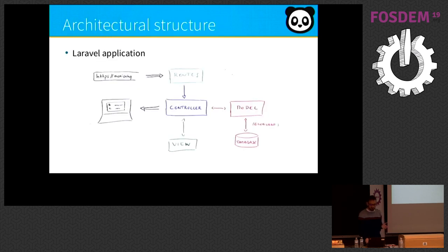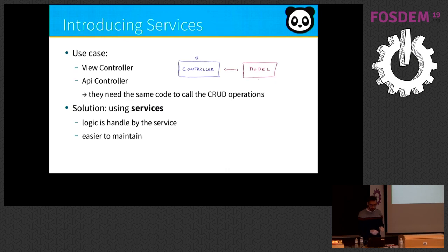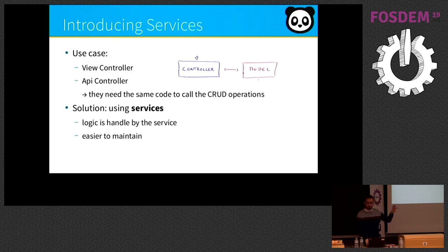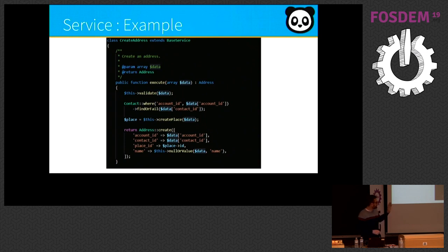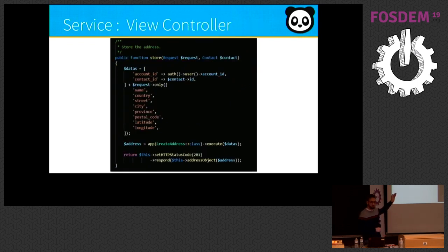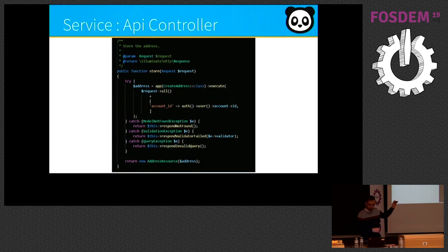To finish, we want an application we have fun developing. In a standard Laravel application, the controller in the center needs data from the database and behind it there is a model. But if you have both a view controller and an API controller, sometimes they need the same code to call operations on the database. The solution we implemented in Monica is using services. The logic is handled by the same service whether it's a view or an API controller. You can see an example of a service to create an address — both the view controller and the API controller use the same service to do the same thing.